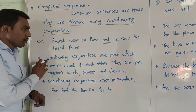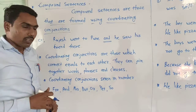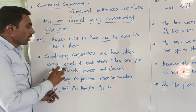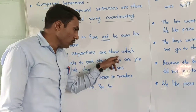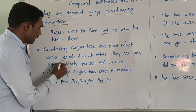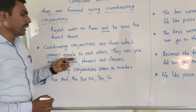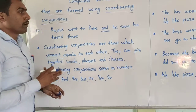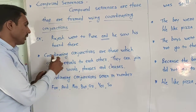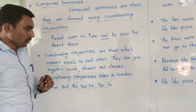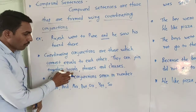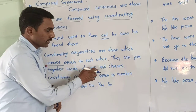What is meant by coordinating conjunctions? We learnt before that coordinating conjunctions are those which connect equal parts to each other. They can join together words, phrases, and clauses.